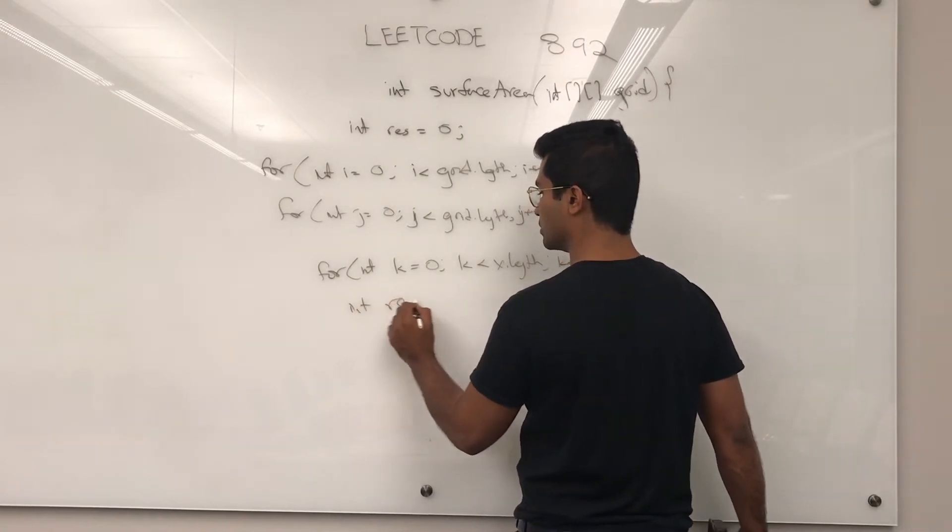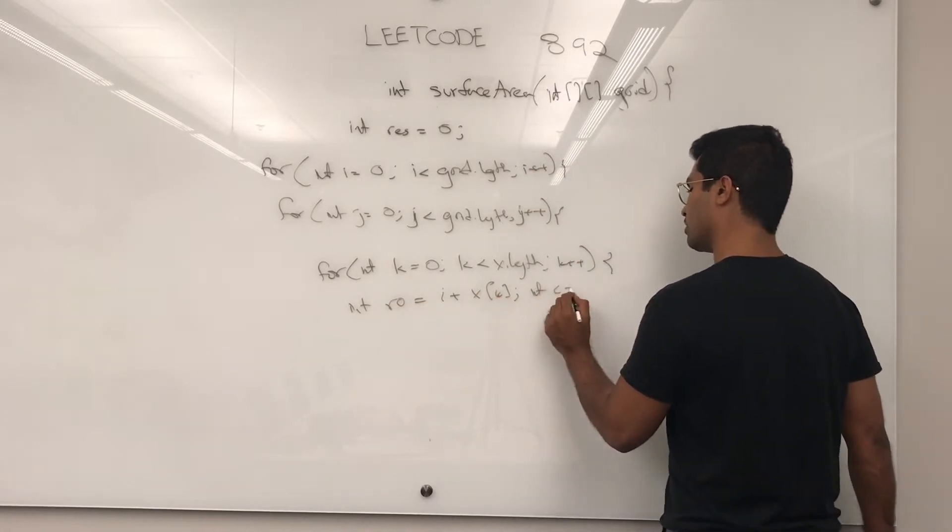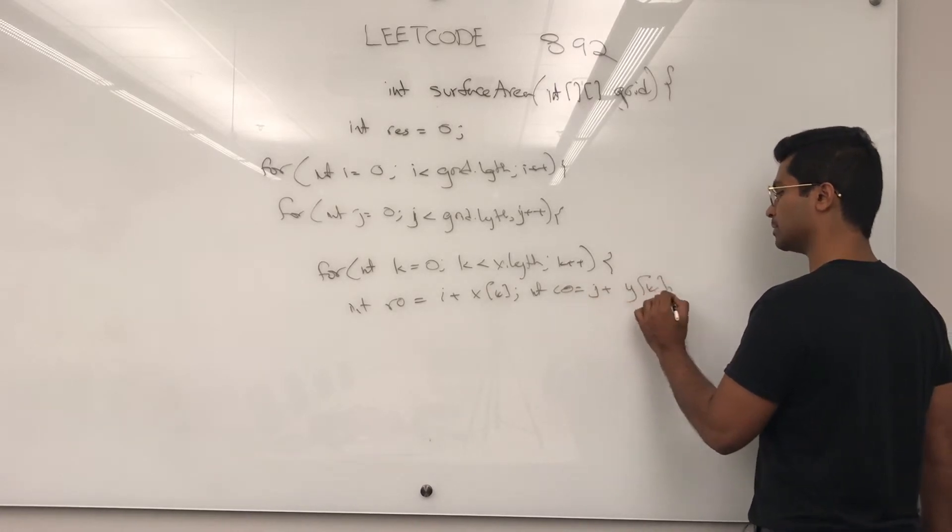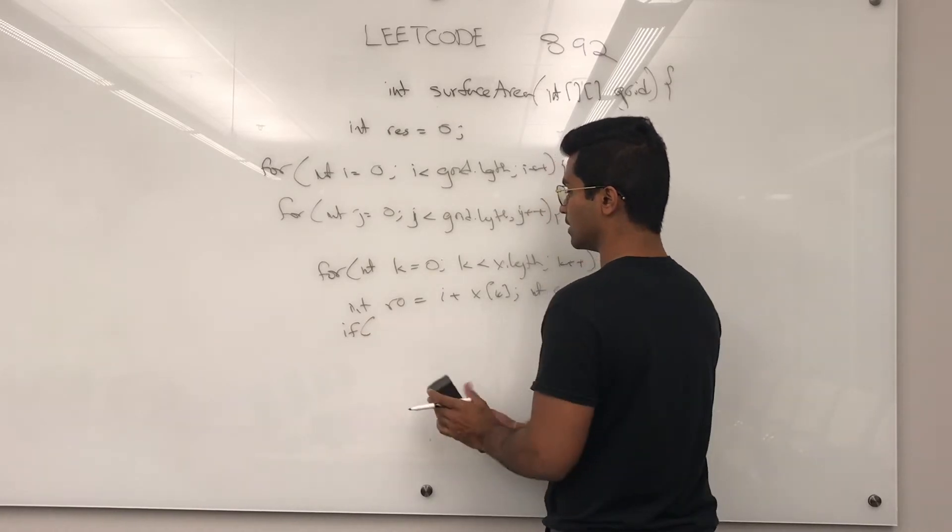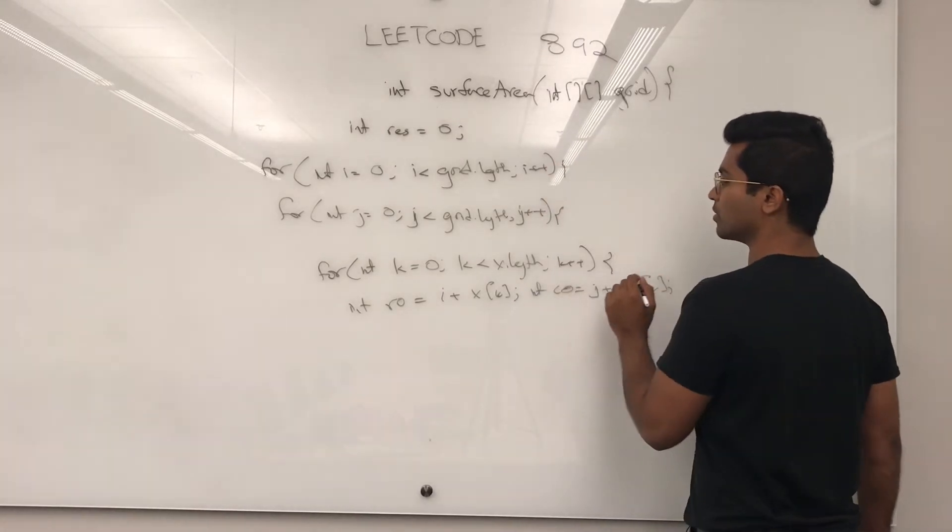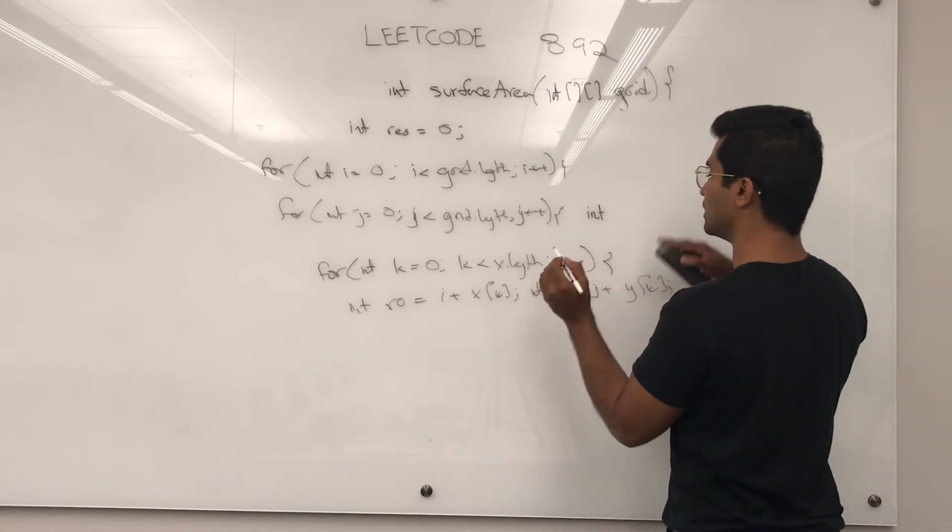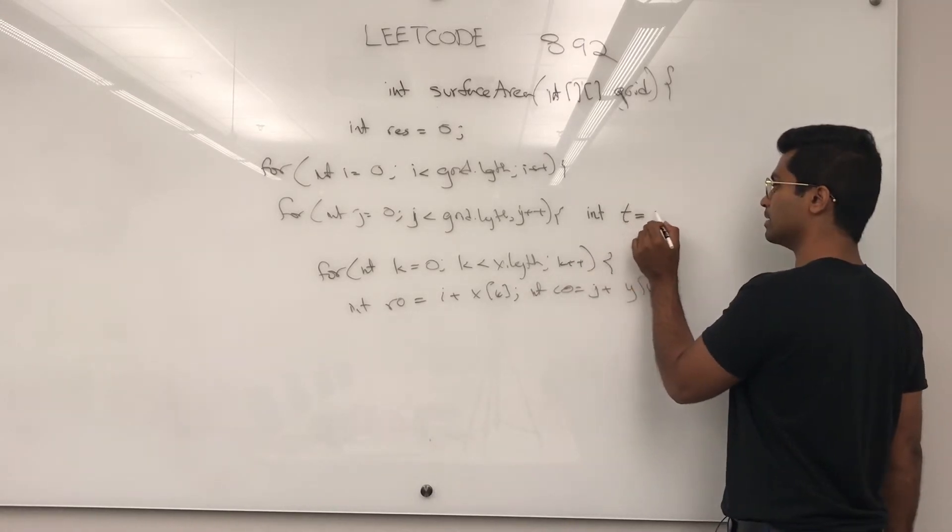Int row, this is the new row, i plus x of k, int col is j plus y of k. Okay, if it's inside, okay, we actually have to initialize another thing. So, int, this is going to be kind of like the temp variable. Temp is going to be 0.